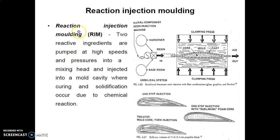In this video we are going to see Reaction Injection Molding, which is a continuation of injection molding. In this process, two reactive ingredients — the hardener and base resin — are pumped at high speed and pressurized into the mixing head, then injected into a mold cavity where curing and solidification occur due to chemical reactions.